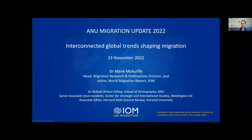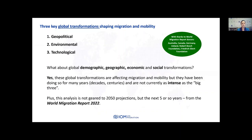I have the next seven to ten minutes to take you through some of the big global transformations affecting migration and mobility, and I will do that through a PowerPoint presentation and step you through some of the really big challenges and some of the interconnected global trends shaping migration and mobility. The three key global transformations shaping migration and mobility in the current environment include geopolitical change, environmental transformations, and technological transformations.